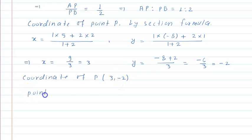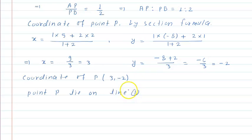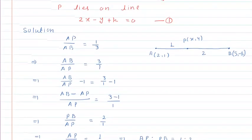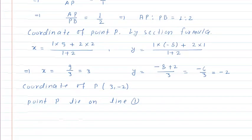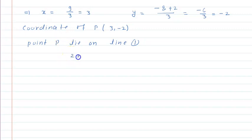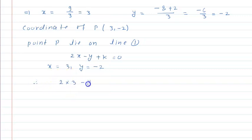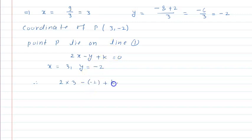Now we need to find the value of K. Point P lies on line 1, so it will satisfy the equation 2x minus y plus k equals 0. Substituting X equals 3 and Y equals minus 2: 2 into 3 minus (minus 2) plus K equals 0, which gives 6 plus 2 plus K equals 0, so 8 plus K equals 0, therefore K equals minus 8.